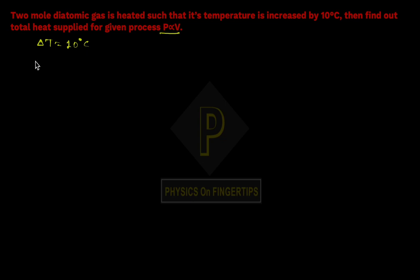The heat supply formula is delta Q = n*C*delta T. Here moles n = 2. We need to find the value of C.